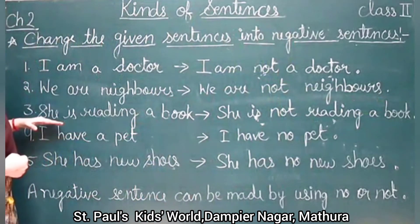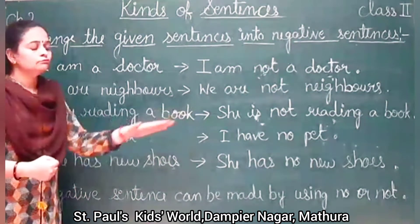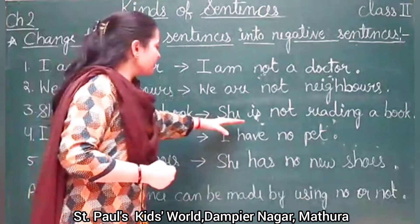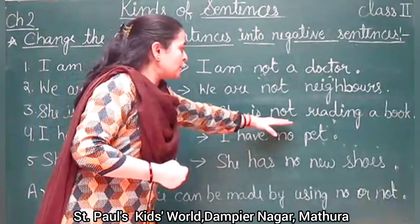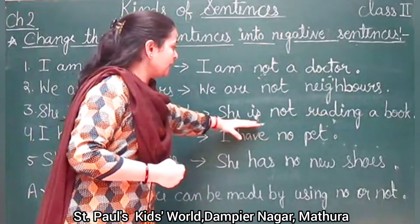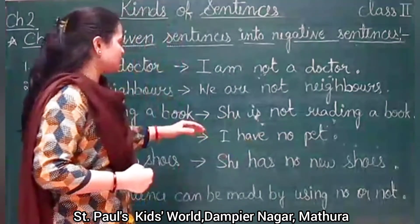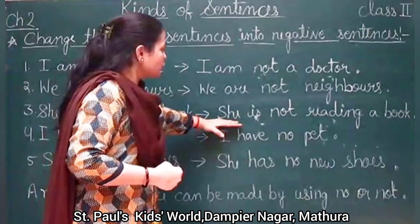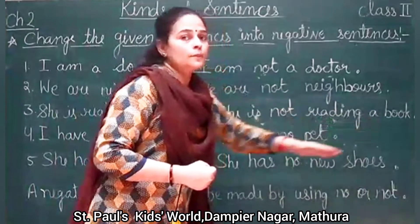The third one is 'She is reading a book.' Same like the previous ones — just after 'is' we will add 'not' and the sentence will remain the same afterwards. So this will become 'She is not reading a book.'